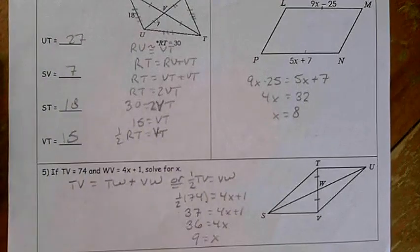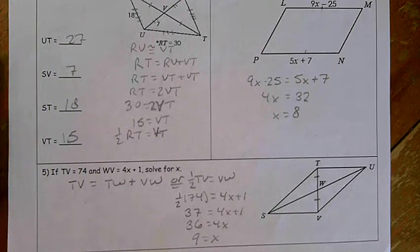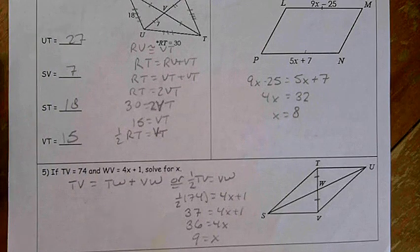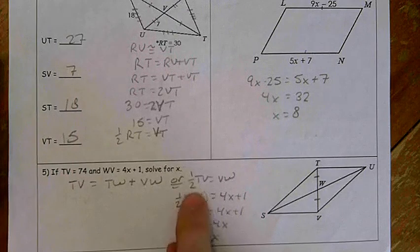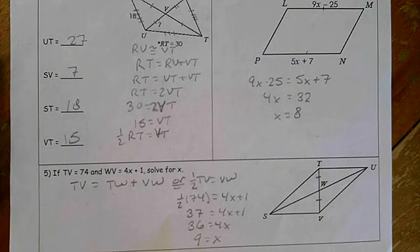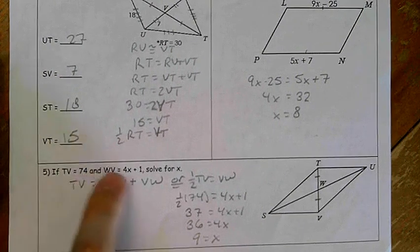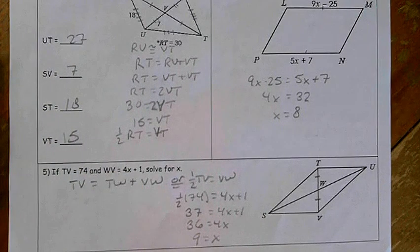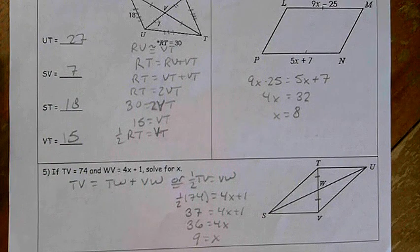I'm going to scroll so we can check out number 5. For number 5, we know that TV is equal to TW plus VW. Or, like we just had, we know that half of TV is equal to VW. So when you plug in your 74 and your 4X plus 1, you should get X equals 9.